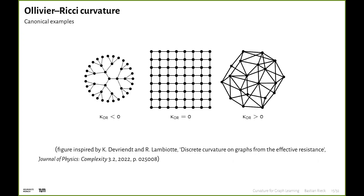What are the canonical examples? Previously we had saddle surface, plane, and sphere; here we have graph equivalents of those model spaces. For negative Ollivier-Ricci curvature we have tree-like or hyperbolic structures, where there are only a few walks to reach from one node to another. Flat curvature is characterized by grid graphs — very uniform in all directions. Positive curvature is characterized by clique-like graphs, approaching fully connected graphs. This is inspired by a great paper on discrete curvature from the effective resistance.